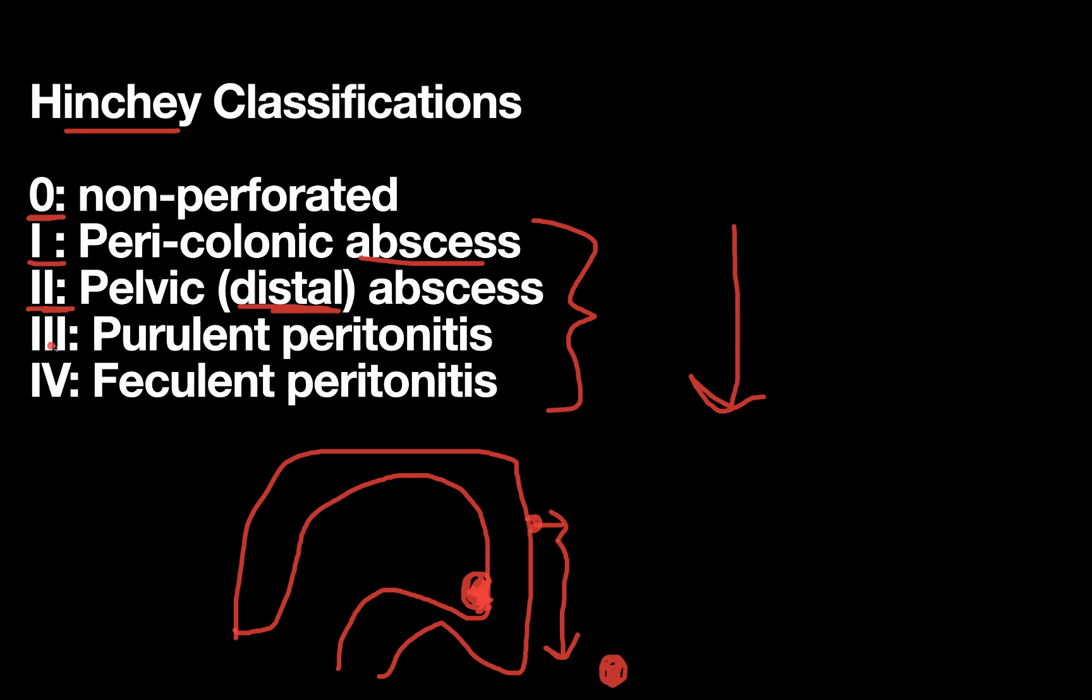The final two classifications are where there is no containment of the infection. So maybe I'll go back to this abscess right here. If this abscess just ruptured, and now you had pus spilling all throughout the abdominal cavity, that would be Hinchey class three, purulent peritonitis, or just free-flowing pus throughout the abdominal cavity causing peritonitis.